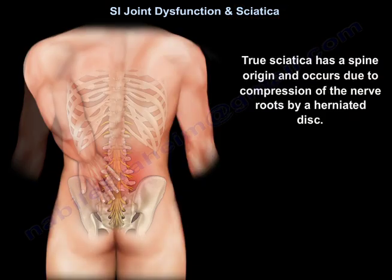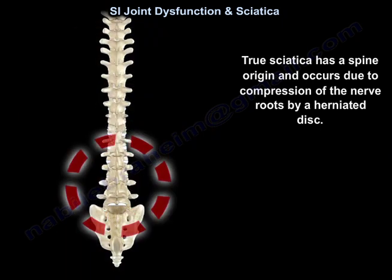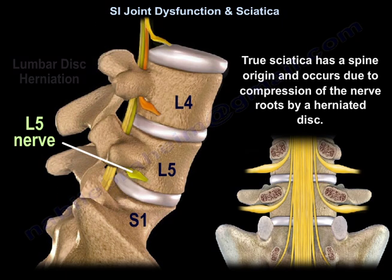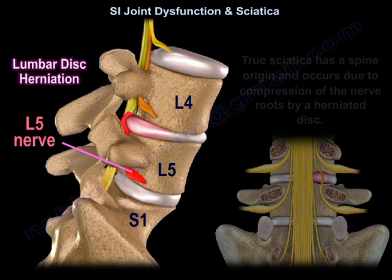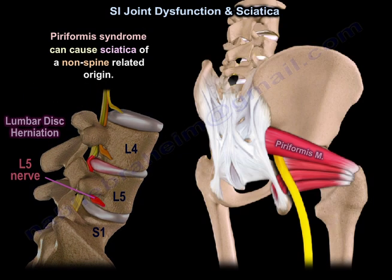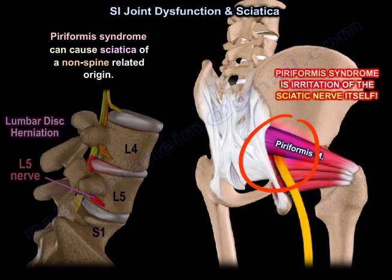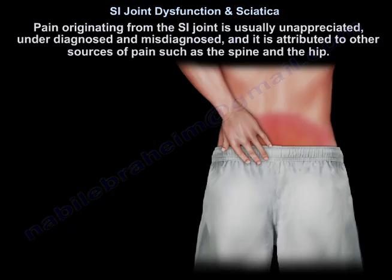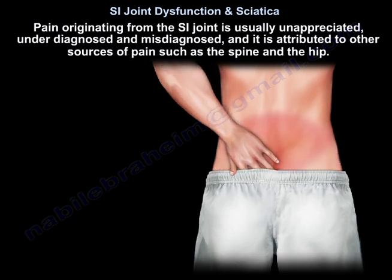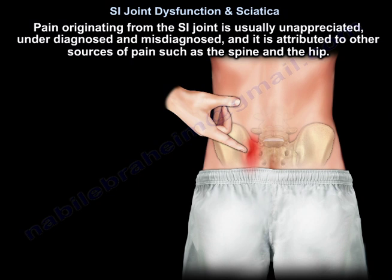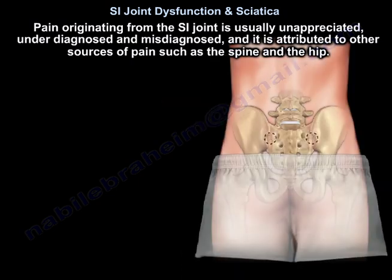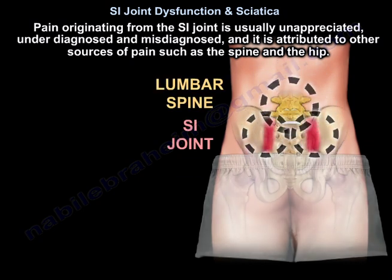True sciatica has a spinal origin and occurs due to compression of the nerve roots by the herniated disc. Piriformis syndrome can cause sciatica of non-spine-related origin. Pain originating from the SI joint is usually unappreciated, underdiagnosed, and misdiagnosed, and it is attributed to other sources of pain such as the spine and the hip.